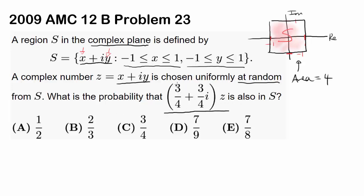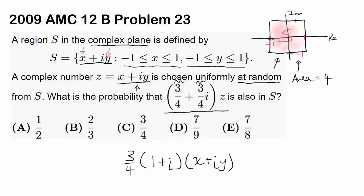Let's simplify by factoring out 3/4, giving us (3/4)(1 + i) times Z, where Z equals x plus iy. So we are picking a complex number x plus iy within the region S, multiplying it by (3/4)(1 + i), and we want to find the probability that the resulting complex number is also inside S.